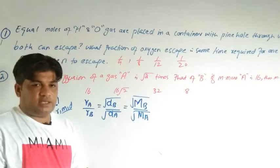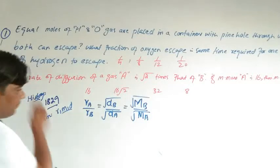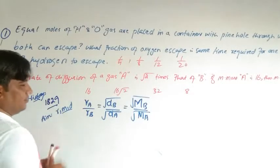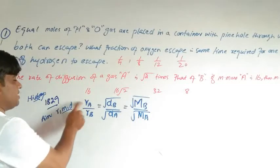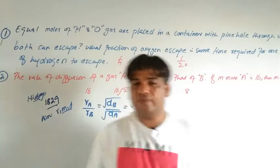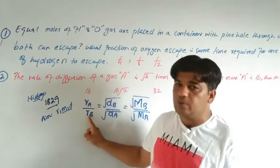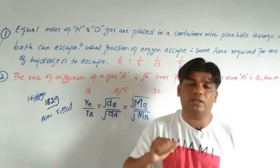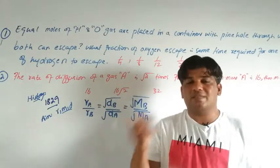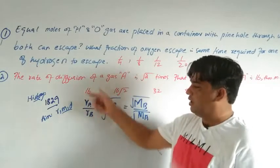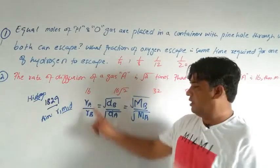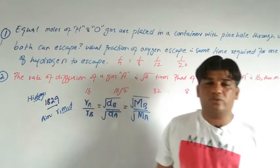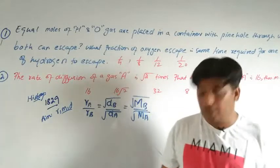Now MCQs are possible from this. Remember: if a question asks for the rate of diffusion of A with respect to B, then B goes in the denominator (gets '1'). If it asks for the rate of diffusion of B with respect to A, then A goes in the denominator. Whichever gas you are comparing with respect to, that gas goes in the denominator.